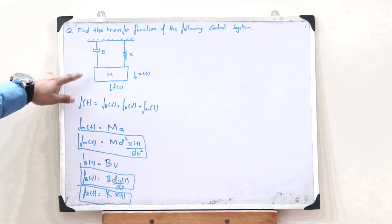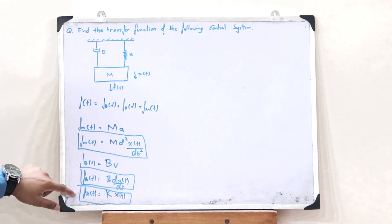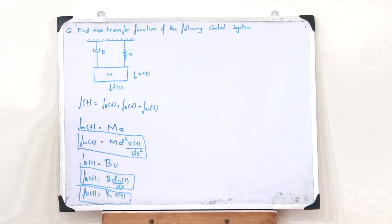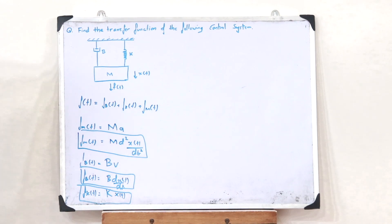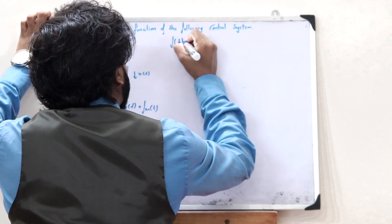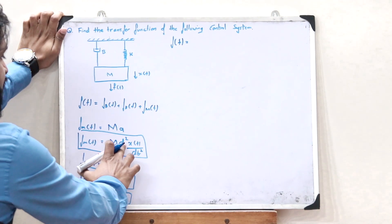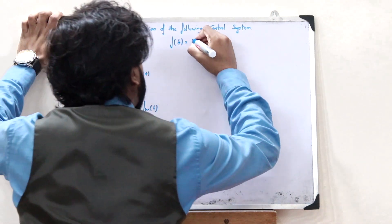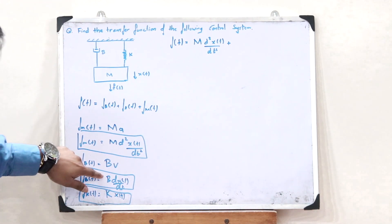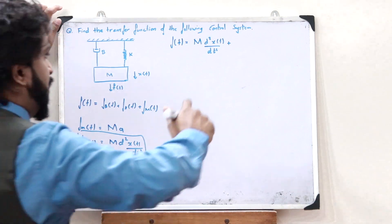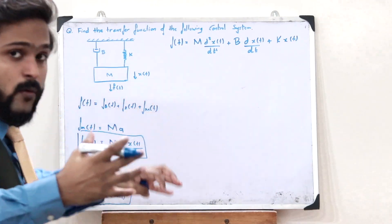These are the forces acting on the mass, the forces acting on the damper, and the force acting on the spring. Applying these three to the equation, we get F of T is equal to M·d²X(T)/dt² plus B·dX(T)/dt plus K·X(T). With this, we have obtained the force equation.